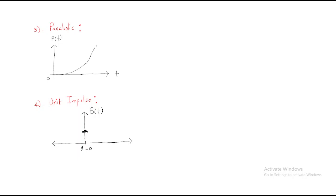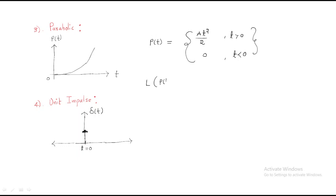The next signal is the parabolic signal. It looks like a parabola, slowly increasing. It is represented as p(t). For t greater than 0, the magnitude value is at²/2; for t less than 0, the magnitude value is 0. Applying the Laplace transform to the parabolic signal p(t) gives a/s³.